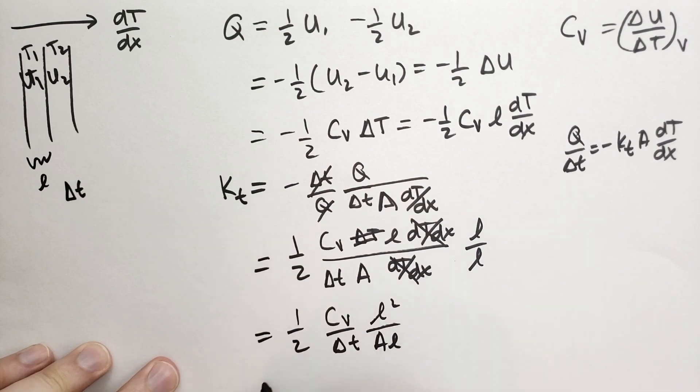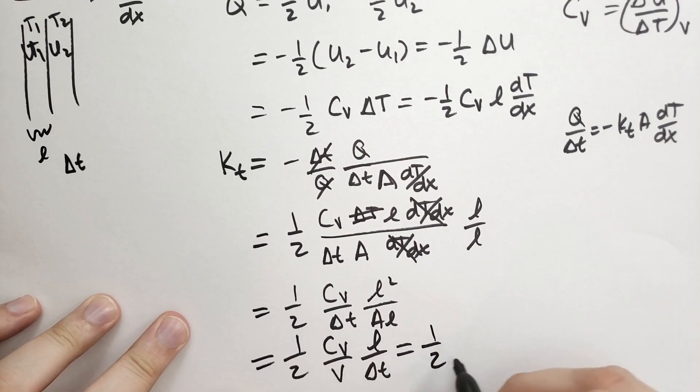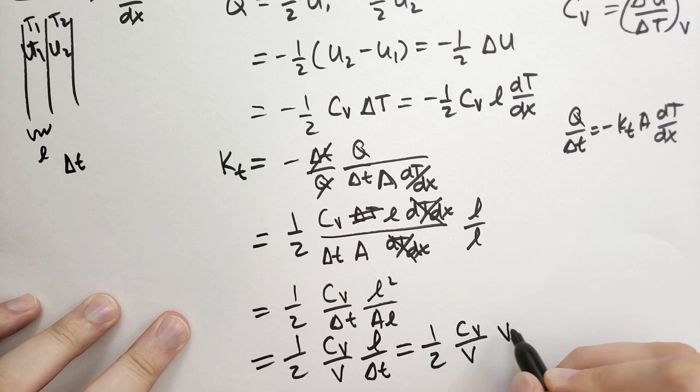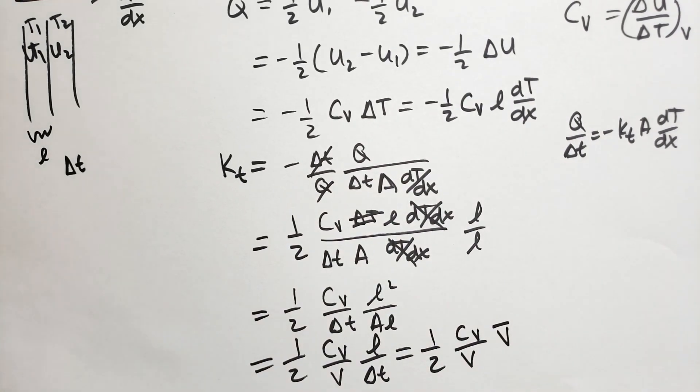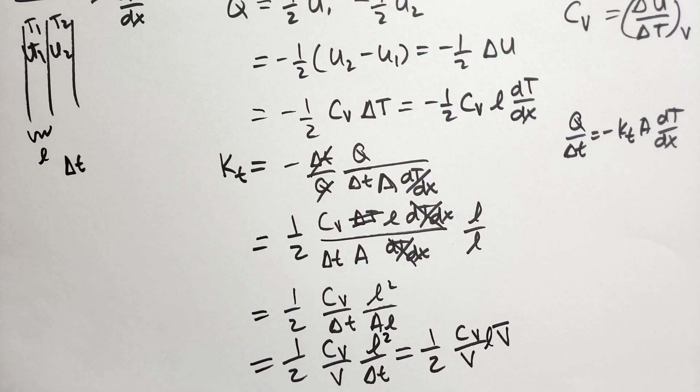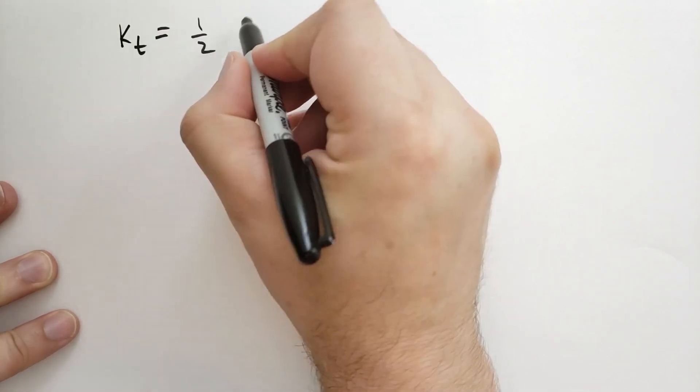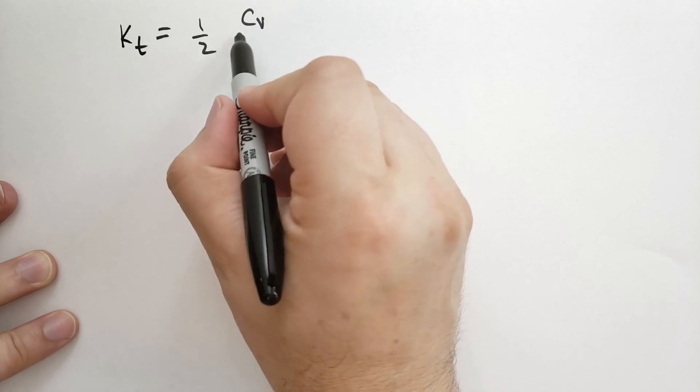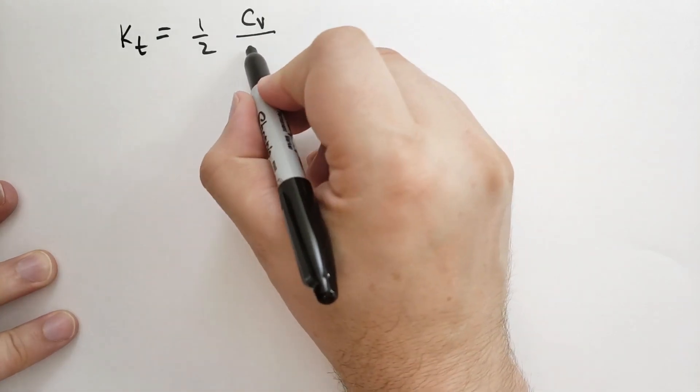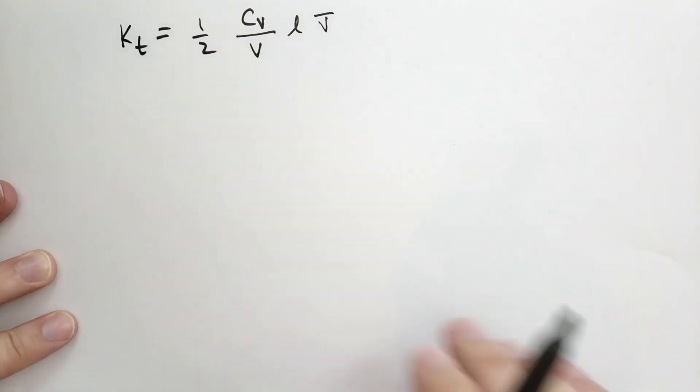And AL is just the volume, so we get one half CV over the volume, times L over delta T. Well, that's the mean free path divided by the time, and that's just the velocity of the particles, the average velocity that is, times the average velocity of the particles. Did I miss an L? I did. There's another L here. All right. So we've calculated that the KT for an ideal gas is equal to one half the heat capacity, keeping volume constant, divided by the volume, times L, times the average velocity.